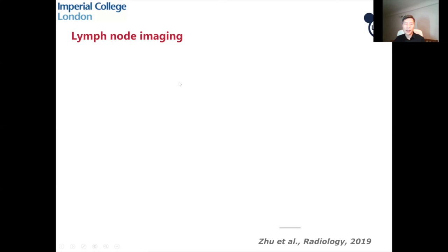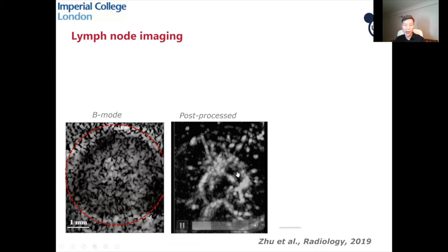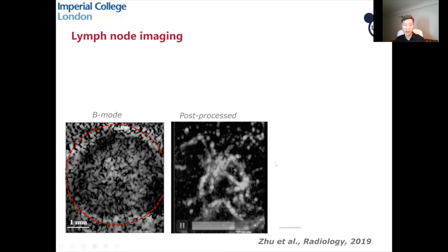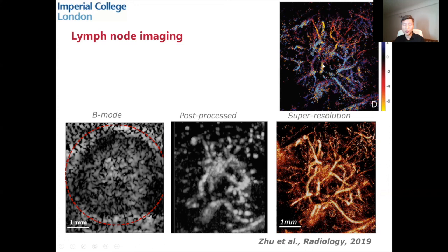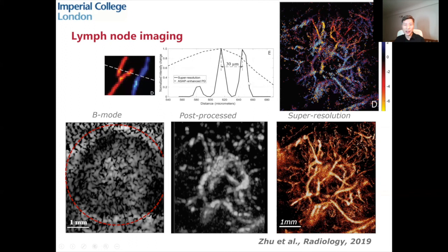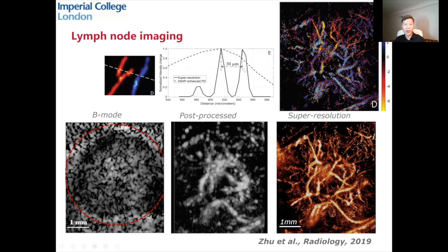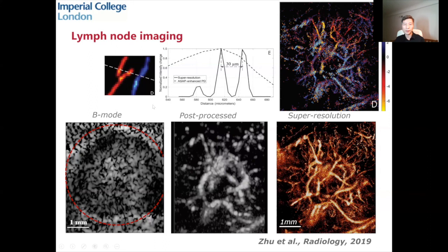This is another piece of recent work — a rat lymph node, a quite small one of 4 mm diameter. Using the B-mode image and a contrast image showing microbubbles moving in the micro vasculature of the lymph node, and by localizing and accumulating over time, we generate a super-resolution image of the lymph node micro vasculature and also super-resolved velocity maps. This study demonstrated resolution of at least 30 microns by separating two vessels — confirmed because tracking also shows flow in opposite directions in the two vessels.